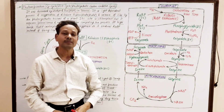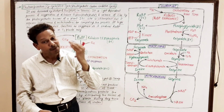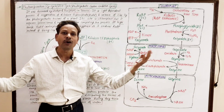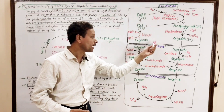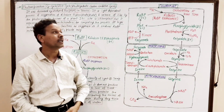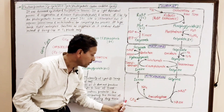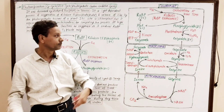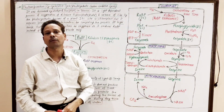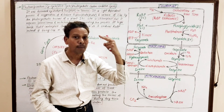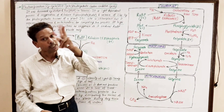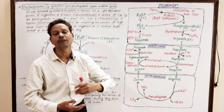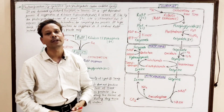Photorespiration means respiration associated with photosynthetic organs. In this process, chloroplasts, peroxisomes, and mitochondria are involved. Molecular oxygen is used and CO2 is evolved — it is the reverse of photosynthesis. It is a highly wasteful process because about 25% of the fixed CO2 gets lost. There is no release of energy and no production of reducing power or assimilatory power. Instead, this process consumes ATP energy.